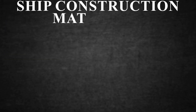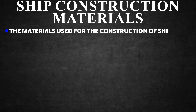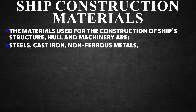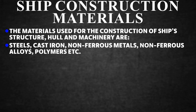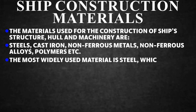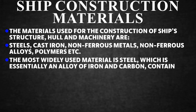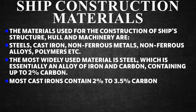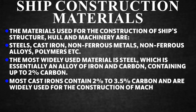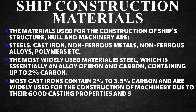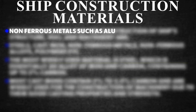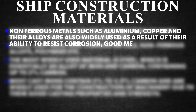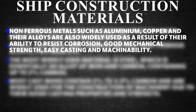Ship Construction Materials. The materials used for the construction of ship structure, hull and machinery are: steels, cast iron, non-ferrous metals, non-ferrous alloys, polymers, etc. The most widely used material is steel, which is essentially an alloy of iron and carbon containing up to 2% carbon. Most cast irons contain 2% to 3.5% carbon and are widely used for machinery construction due to their good casting properties and strength. Non-ferrous metals such as aluminium and copper and their alloys are also widely used for their ability to resist corrosion, good mechanical strength, and easy casting and machinability.